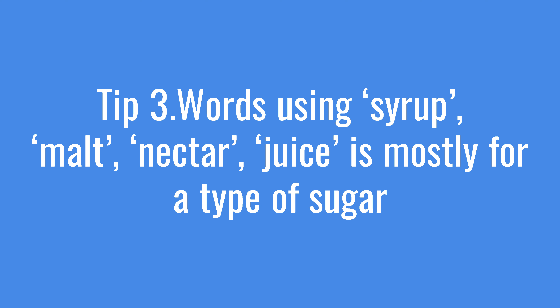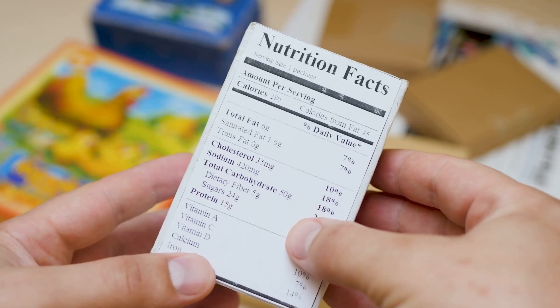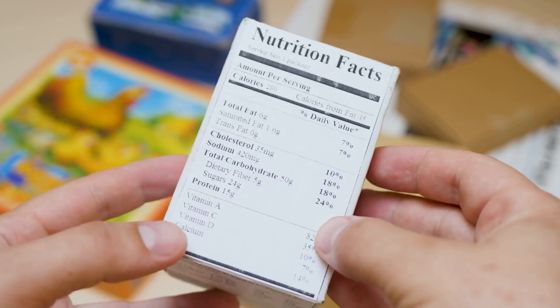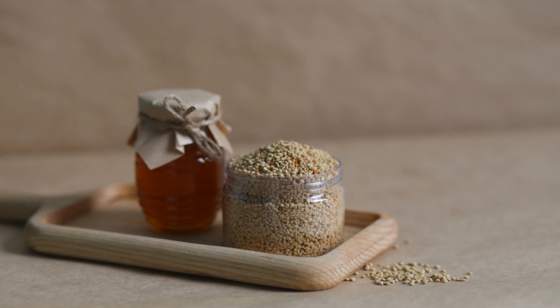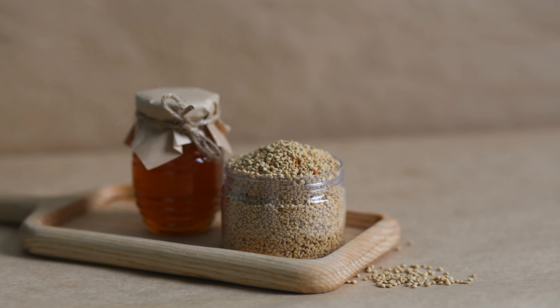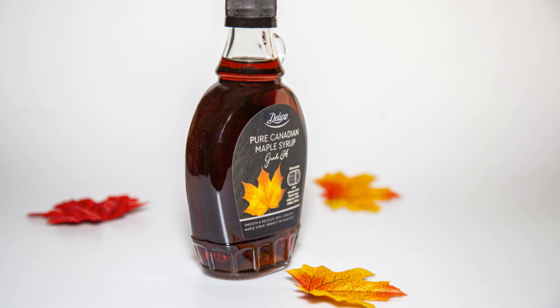Watch out for words like syrup, malt, nectar, or juice — these often indicate added sugar. Some examples are agave syrup, brown rice syrup, maple syrup, cane juice, and agave nectar.